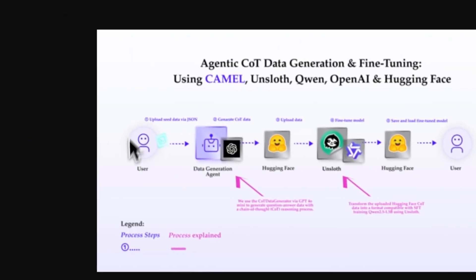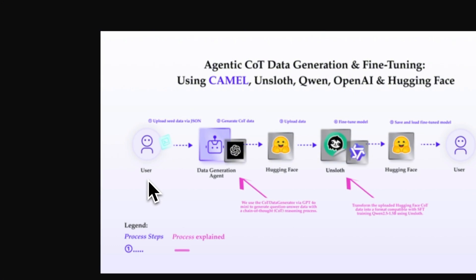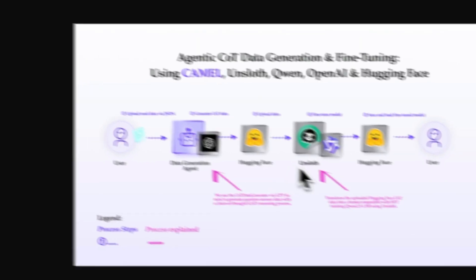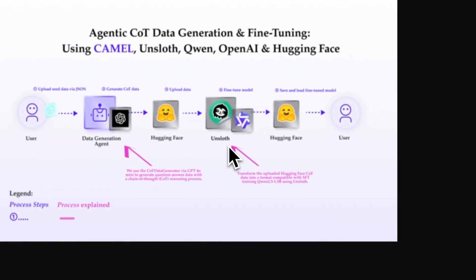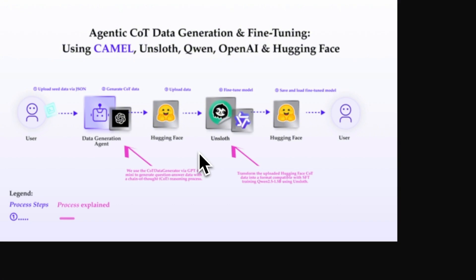Here's the workflow: we're going to get a dataset from the user that only contains question-answer pairs, then we'll use one of the generators from Camel AI which will convert this question-answer dataset into a chain of thought dataset, implementing intermediate steps using a model from OpenAI or open-source models. You can upload that created dataset to Hugging Face for later usage or to share with the community. We'll use that dataset to fine-tune our model using Unsloth, and I'll show you the difference in responses between the supervised fine-tuned model and the unfine-tuned model.